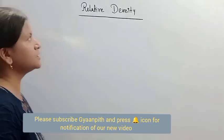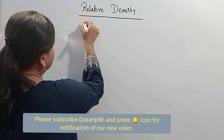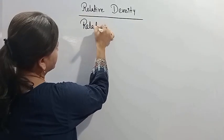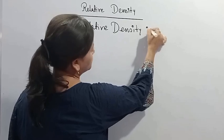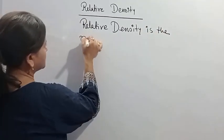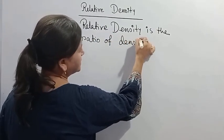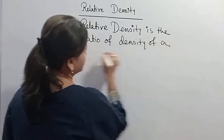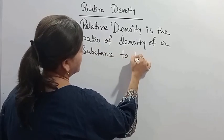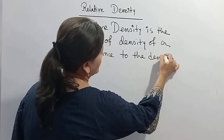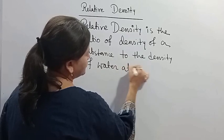This topic is relative density from Class 8, physical quantity and measurement. Relative density is the ratio of density of a substance to the density of water at 4 degrees Celsius.